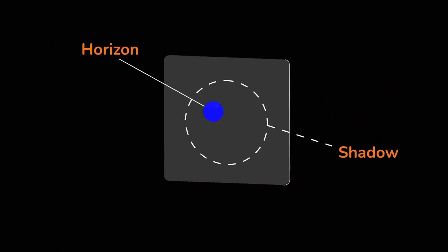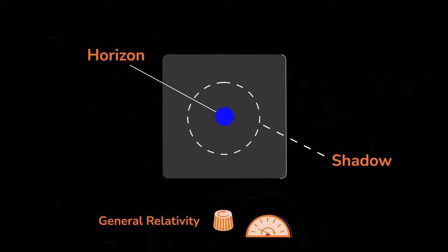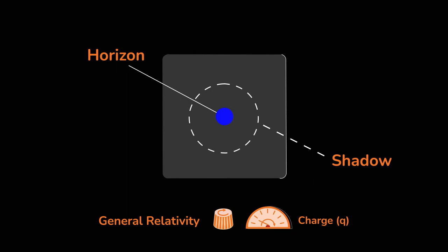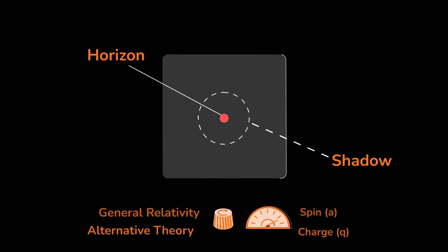Smaller black holes cast smaller shadows. Based on the size of their shadows, it is possible to tell whether they were charged or rotating or from a completely different theory.